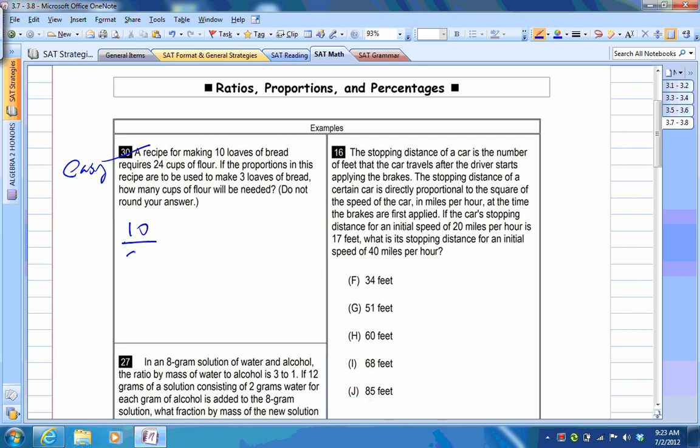So 10 over 24, so it looks like we're doing loaves to flour, would have to equal 3 over x. Because again, you have 3 loaves but you need to know how many flours for that. So 10x equals 72, x equals 7.2. Easy.